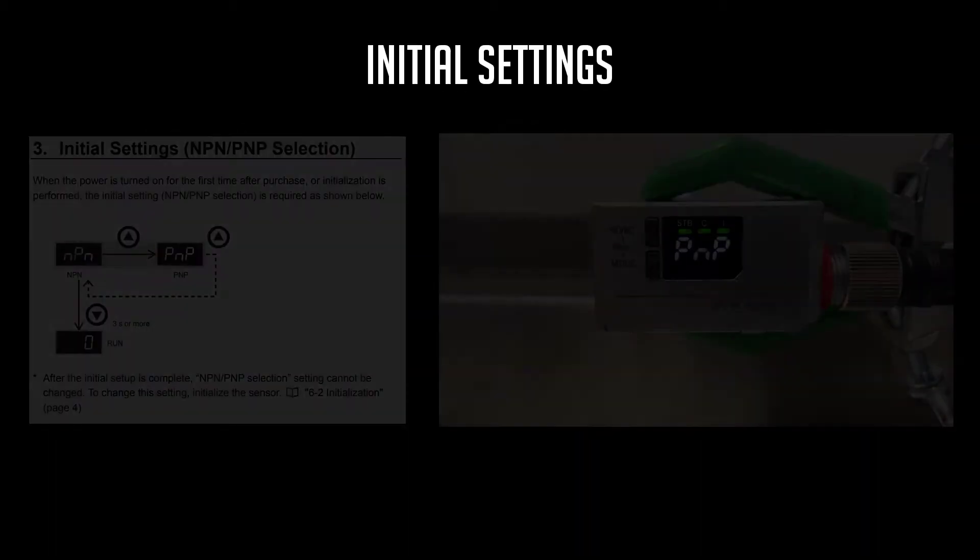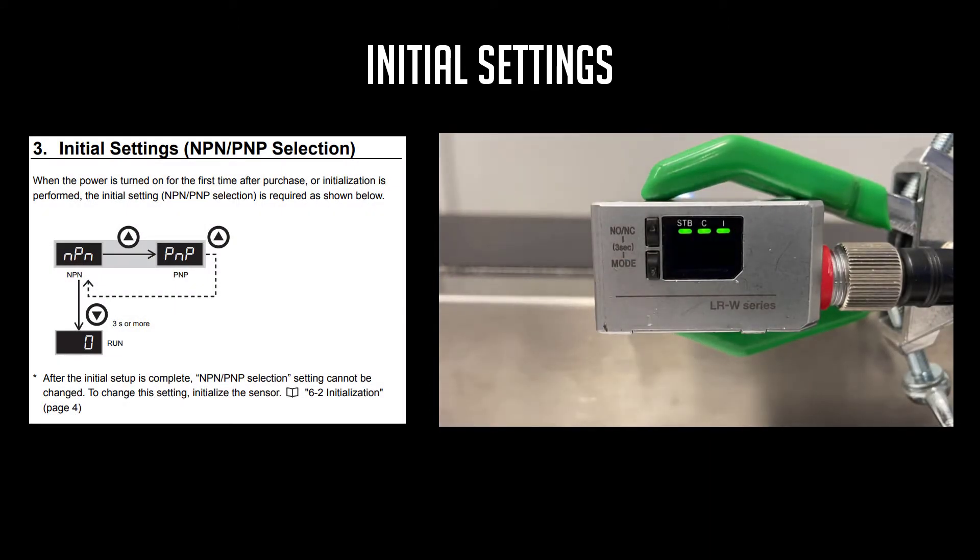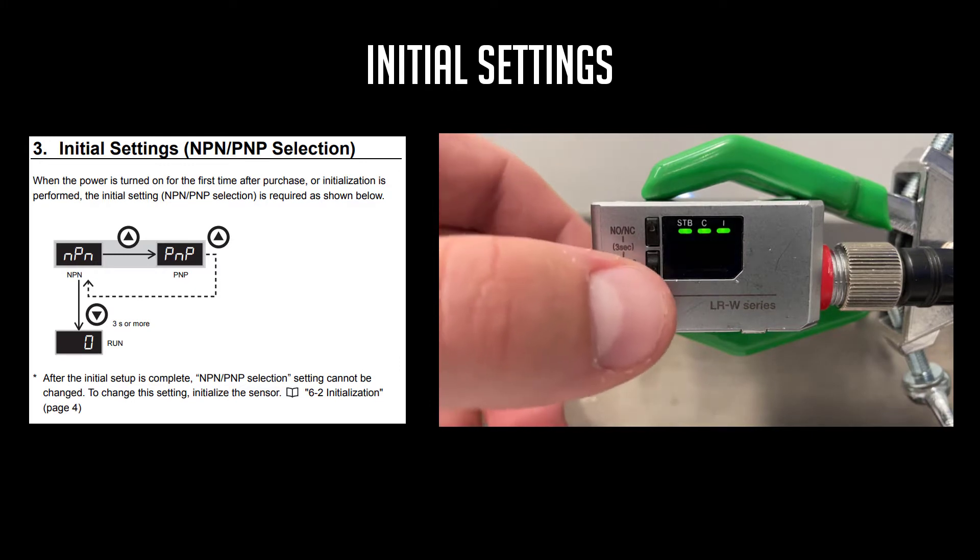The only item that you can select in your initial settings would be your control output signal. Use the up and down arrows to select between PNP and NPN and hold the down button until you see zero confirming your selection.